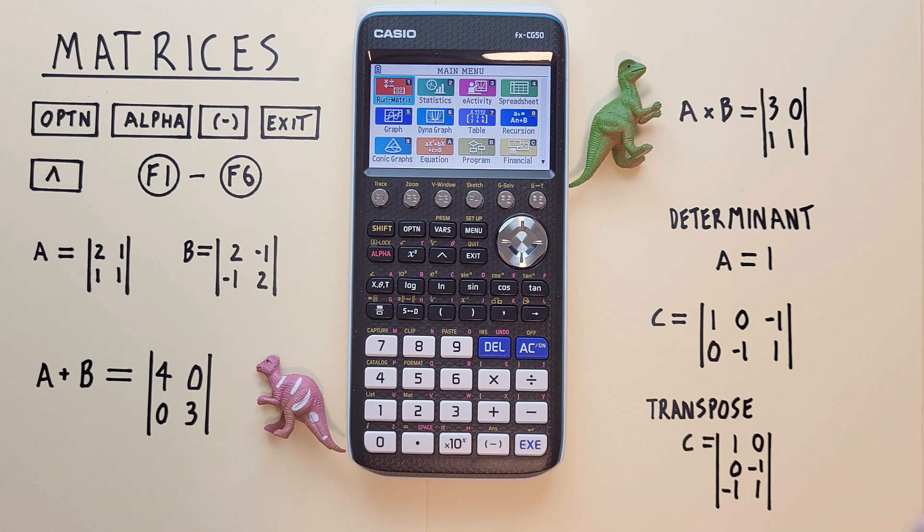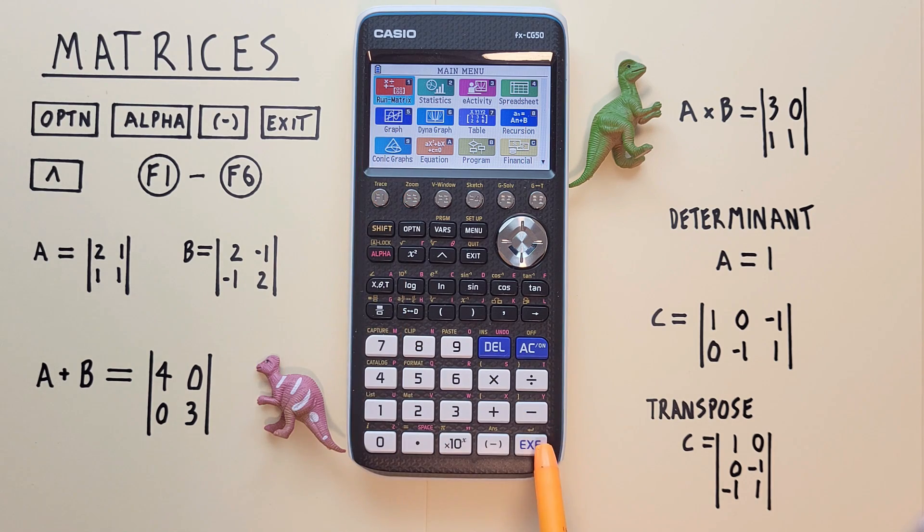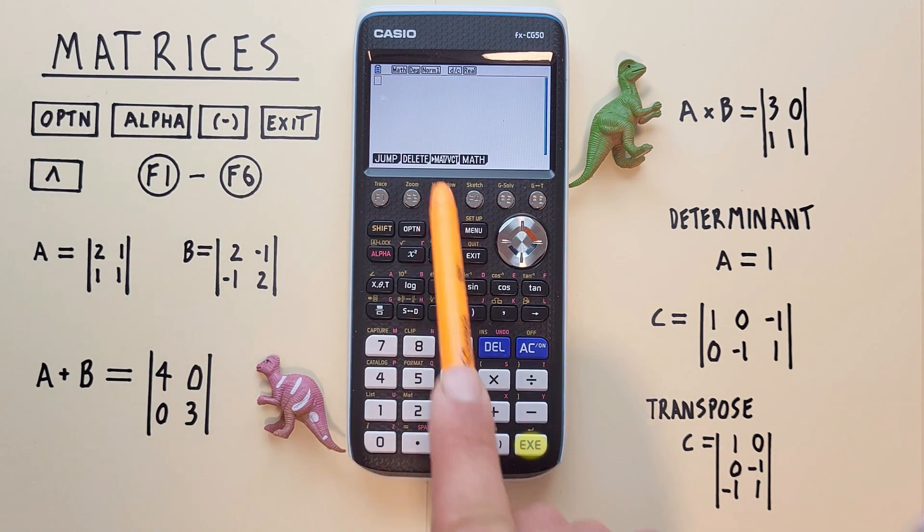To get started from the main menu we want to be in the run matrix mode. That's this one here. We can select it and come to this screen.